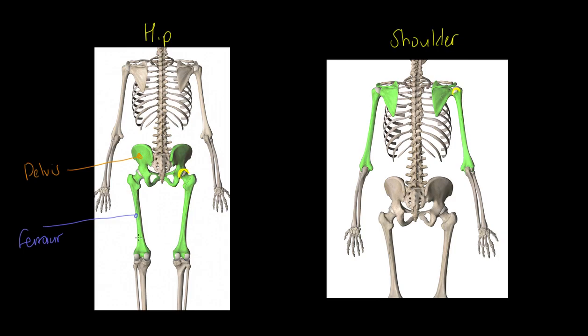At the shoulder, we have our humerus - the long bone in this case. We've also got this bone here, which is your scapula. Please ensure you don't write clavicle - it happens so many times with students. This is the shoulder blade, the scapula.